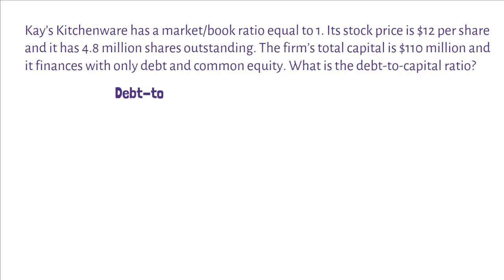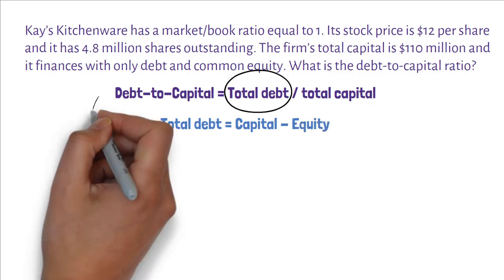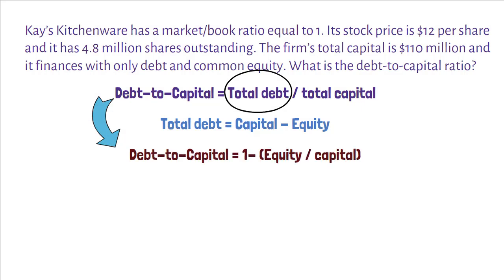Let's bring back the formula of the debt to capital ratio. Since total capital equals total debt plus equity, total debt equals capital minus equity. In the formula, replace total debt with capital minus equity and rearrange. You get: debt to capital ratio equals 1 minus equity over capital.